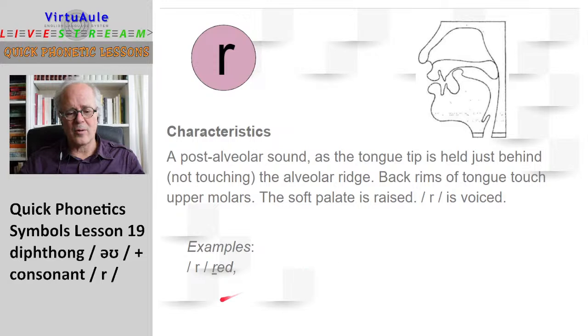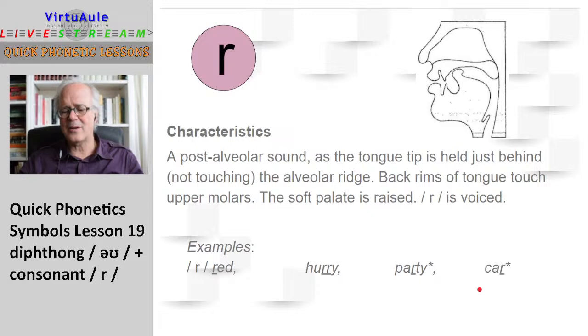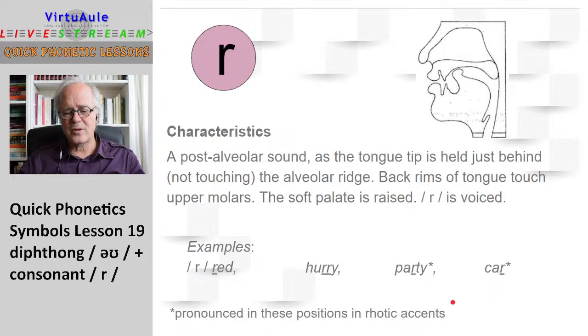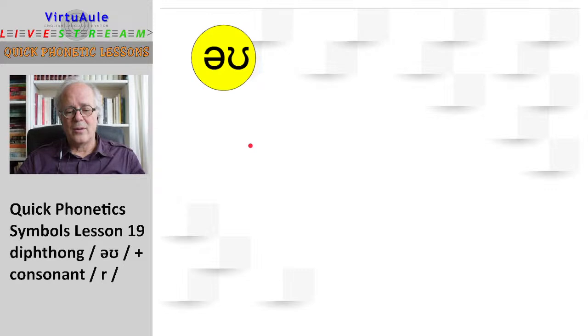You can even open your mouth a little bit if you look. The change of the sound is due to my lips. They're not natural. Open. It's not an open sound. Let's look at some more words. We have red, hurry, party, and car. Okay, these two last ones, these are pronounced when we have rhotic accents. So, more American, some Irish, party, car.